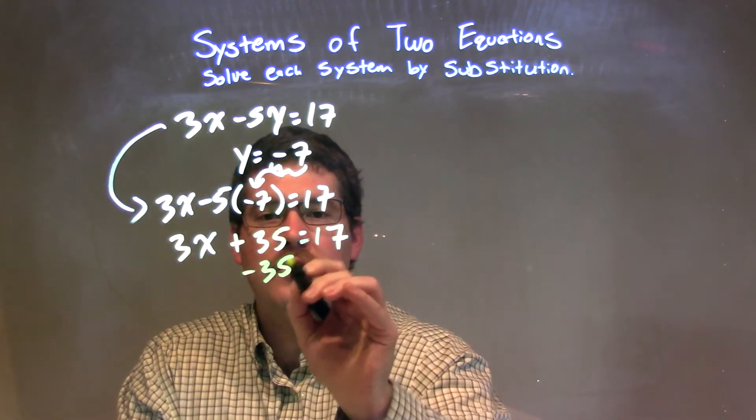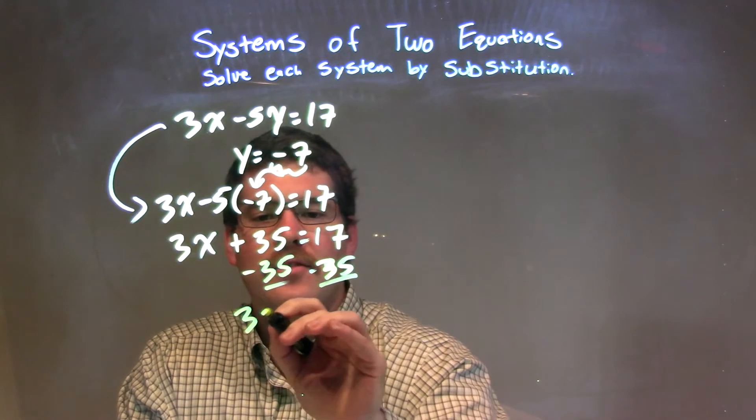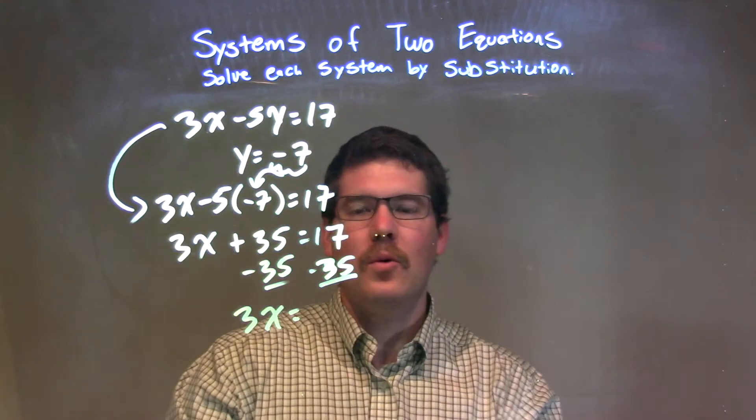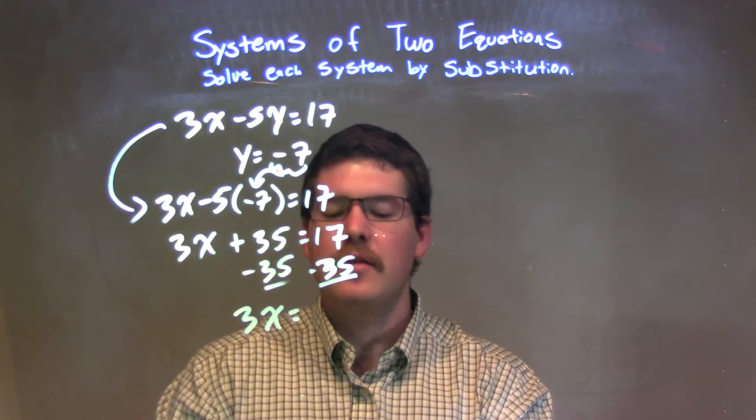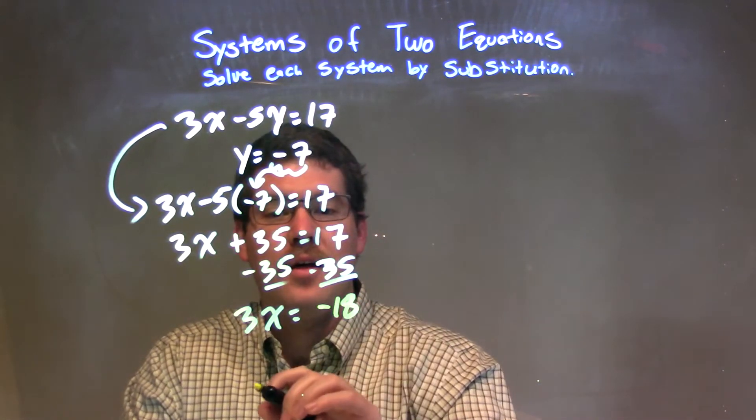I'm subtracting 35 to both sides to get x by itself. And we have 3x equals 17 minus 35. 17 minus 35, right here, is negative 18. So we have negative 18 like that.